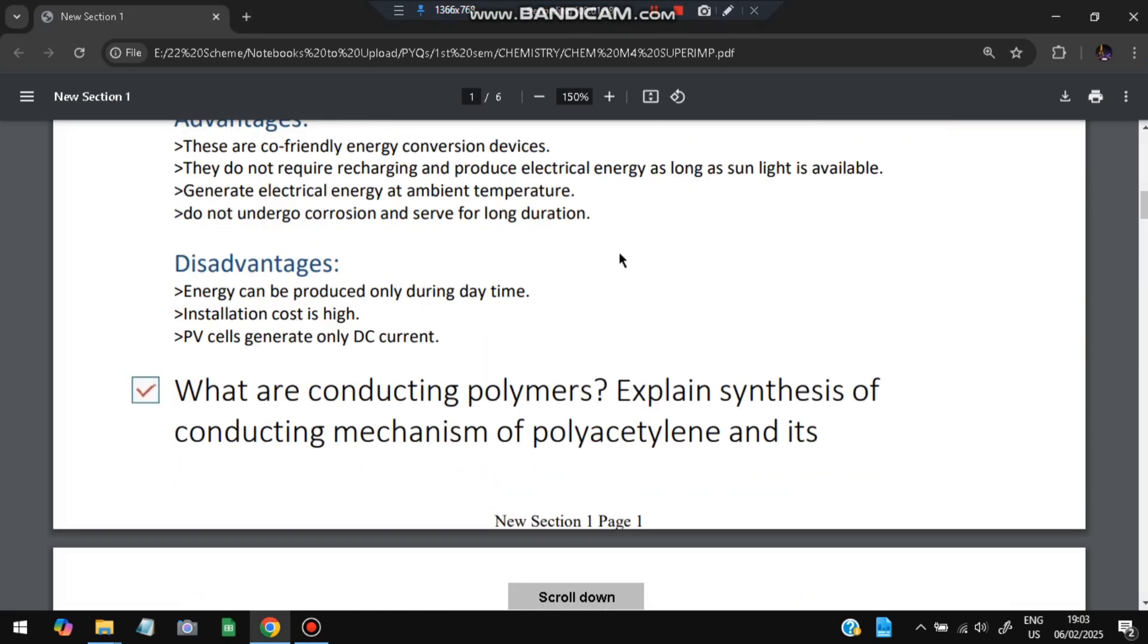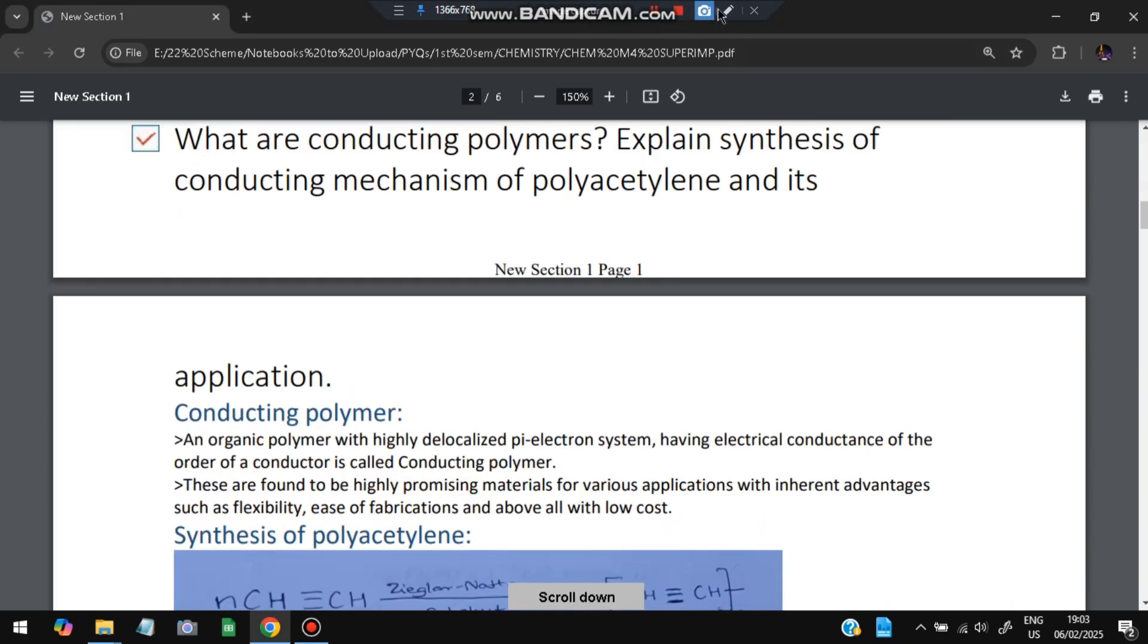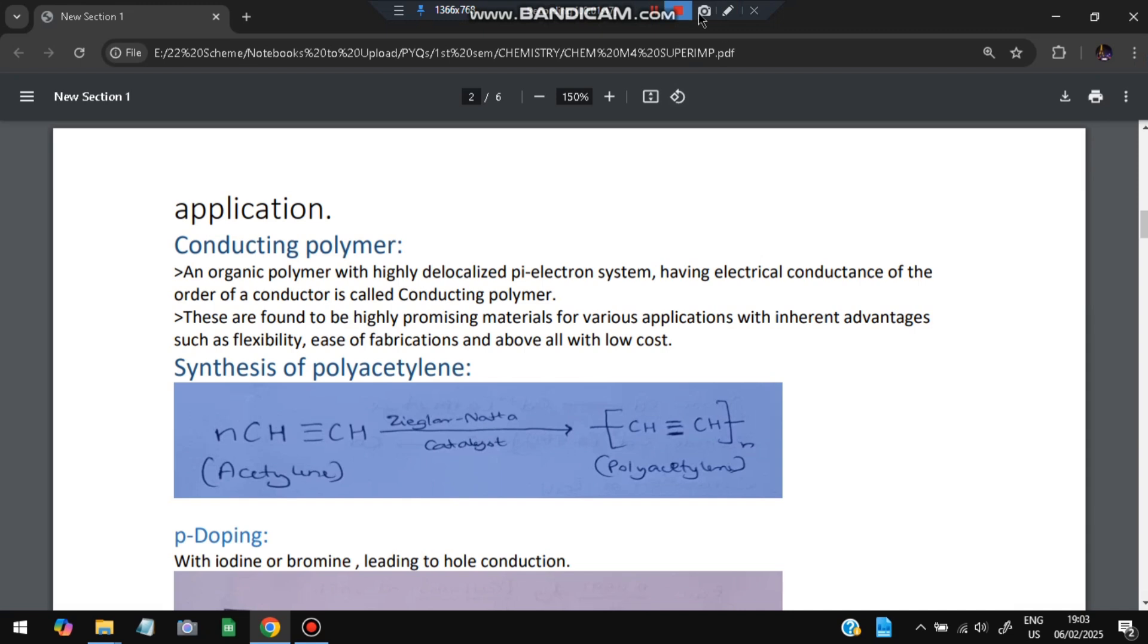What are the conducting polymers? Explain the synthesis and the conducting mechanism of polyacetylene and its application. What is conducting polymer? It is an organic polymer with highly delocalized pi electron system having electrical conductance of order of a conductor, it is called as conducting polymer. So a polymer which conducts is called as a conducting polymer. These are found to be highly promising materials for various applications with inherent advantages such as flexibility, ease of fabrication, and low cost.